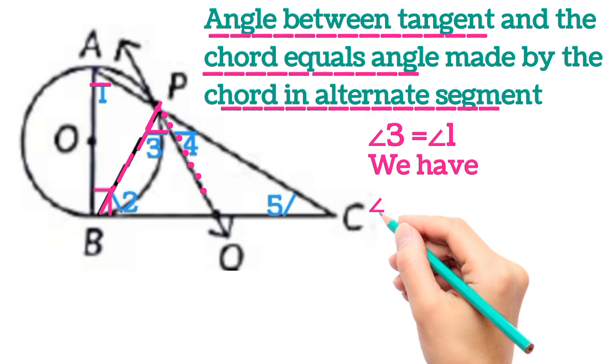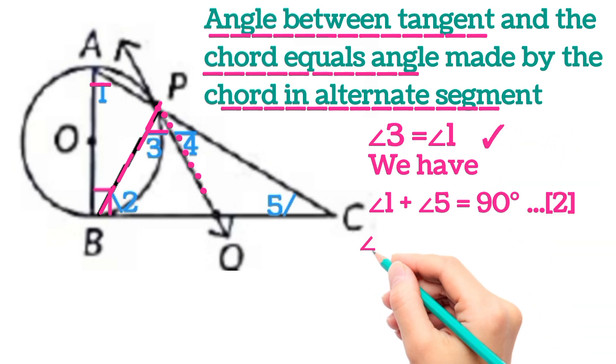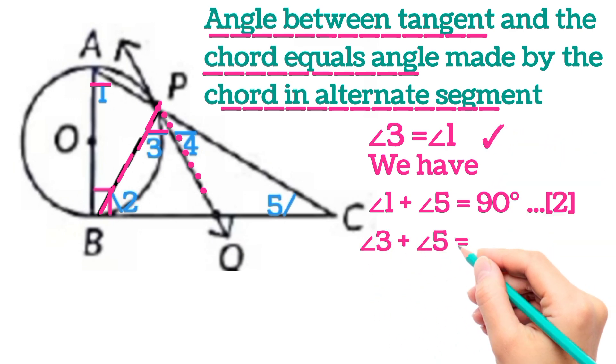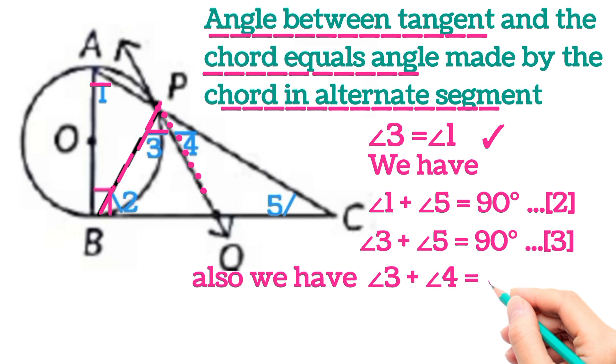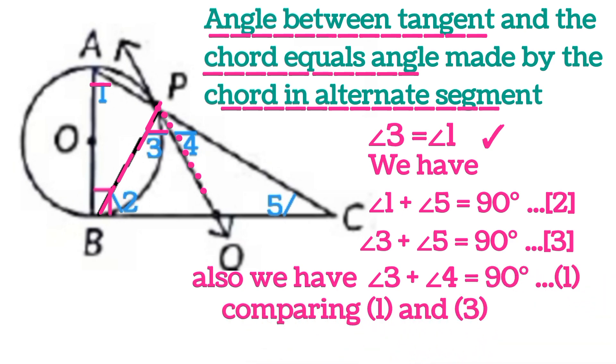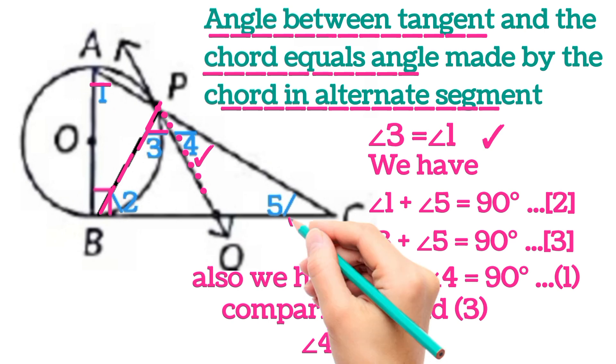Now we have angle 1 plus angle 5 is equal to 90 degrees. This was equation 2, and we know angle 3 is equal to angle 1. So angle 3 plus angle 5 will be 90 degrees. This is now equation number 3. Also we know that angle 3 plus angle 4 is 90 degrees. So on comparing equations 1 and 3, we will get angle 4 is equal to angle 5. That is this angle is equal to this angle.